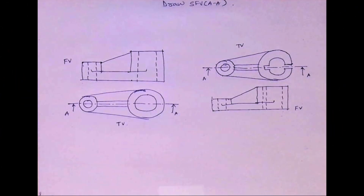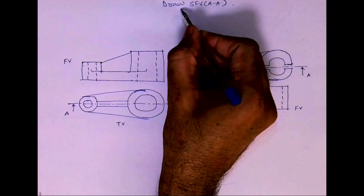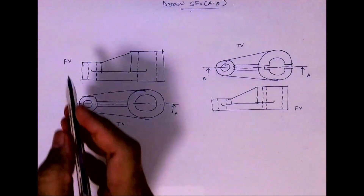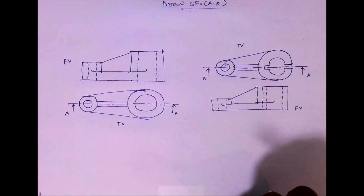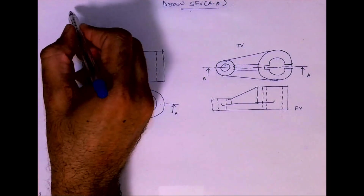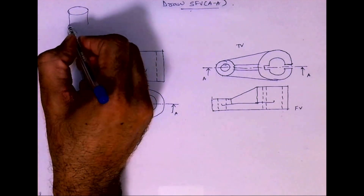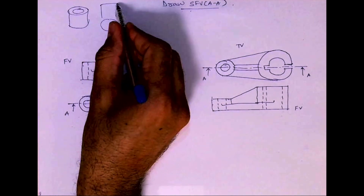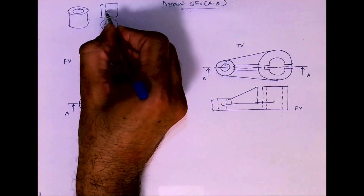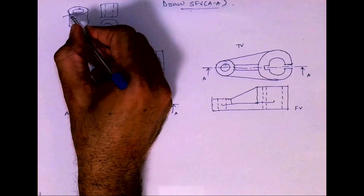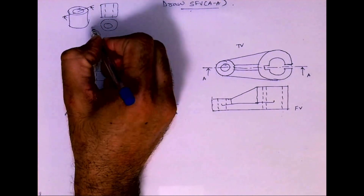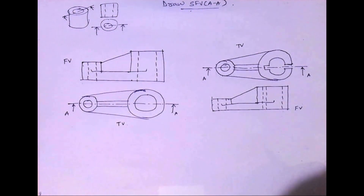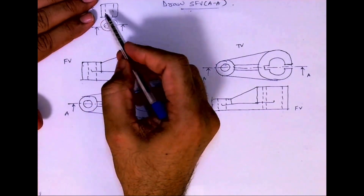Welcome to technical drawing. Today we are going to learn how to draw sectional front view. In this problem, they have given only front view and top view. It is not like how it used to be in normal orthographic section, where they used to give a 3D object and then we had to draw 2D and they used to guide us about the cutting plane line.